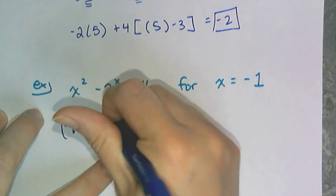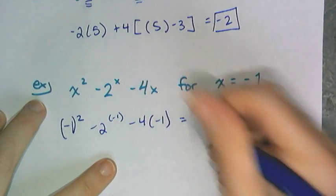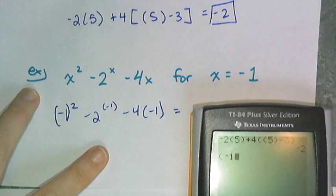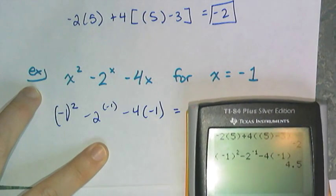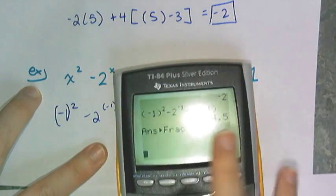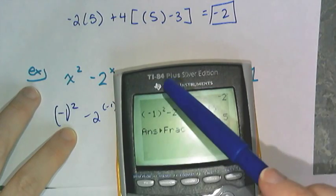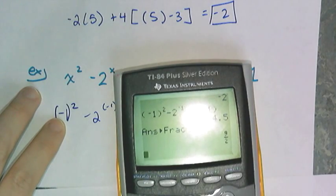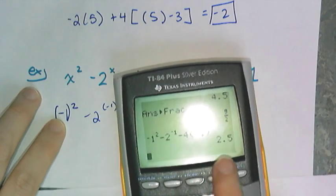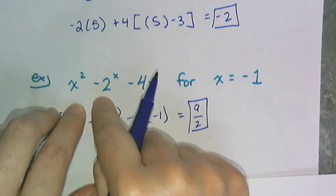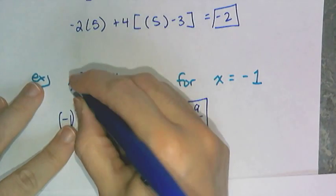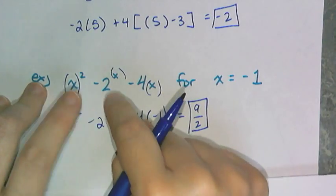So negative one quantity squared minus two to the negative one power minus four times negative one. And then I can just, once again, rely on my trusty calculator. Negative one squared minus two raised to the negative one minus four times negative one. Make sure that looks right. Negative one squared minus two to the negative one, four times negative one. Press enter. And I get 4.5. And oh no, I like fractions better. Math one. Bam. Nine halves. So now this thing here follows the order of operations. You have to make sure you understand what you are asking it to do. And if you had typed in this thing without the parentheses, then you get a very different answer. 2.5, which would be horribly incorrect. So you have to know what this is asking you to do. And you have to know the correct way to write it. But if you remember, just replace the x with the number inside of parentheses, then you are always going to get it correct. So just do that.